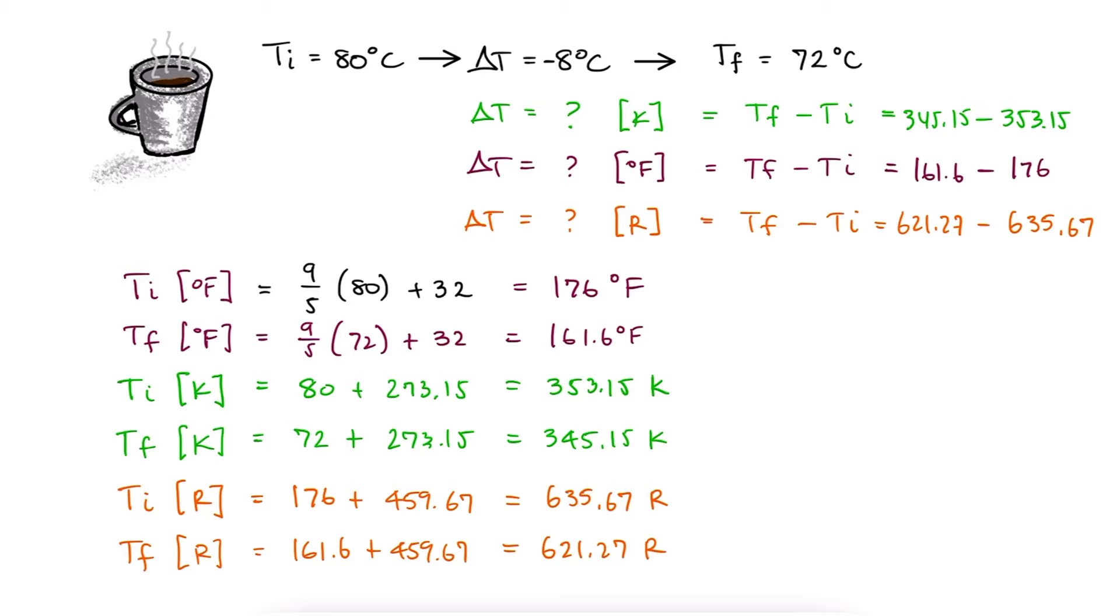In terms of calculations, this is a very simple problem. The takeaway is what is most important though. The change in temperature delta T in Celsius is minus 8 degrees Celsius and also minus 8 in Kelvin. The change in temperature delta T in Fahrenheit is 14.4 degrees Fahrenheit and 14.4 Rankine.